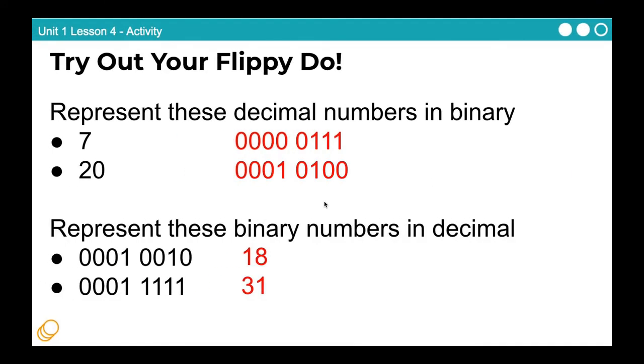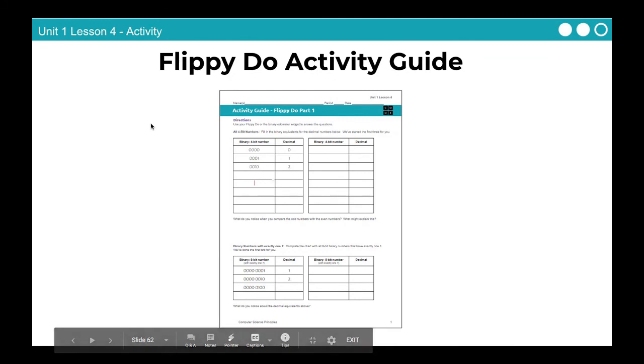Okay. Hopefully that's a succinct explanation for how to use your flippy-do. If you're still struggling, please message us on Google Classroom. Don't forget, you should have this handout. We handed this out in class. What this is, is more practice using your flippy-do, translating decimal numbers into binary and translating binary numbers into decimals, just like we practiced in the previous slide. So make sure you complete that. If you have lost your copy, there should be a digital copy in Classroom or on code.org. Make sure you have this completed by the next time we meet in class.